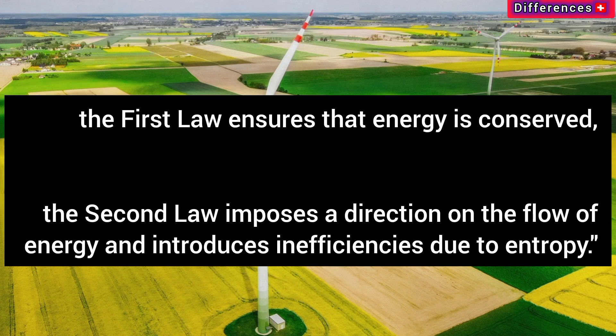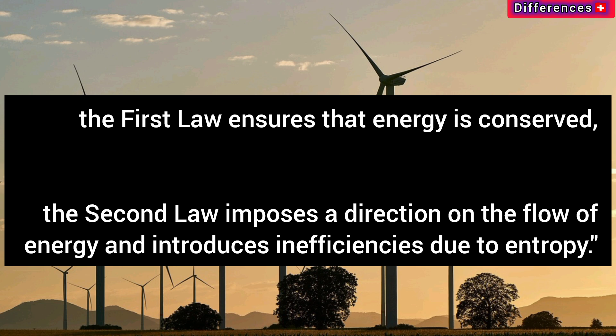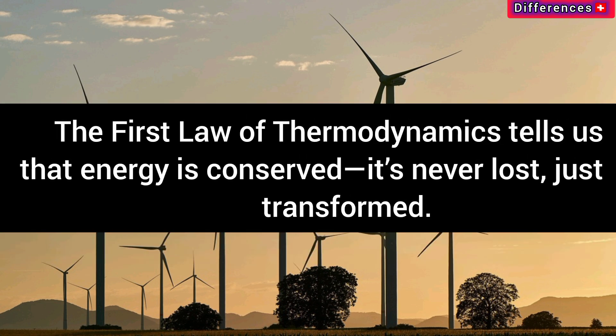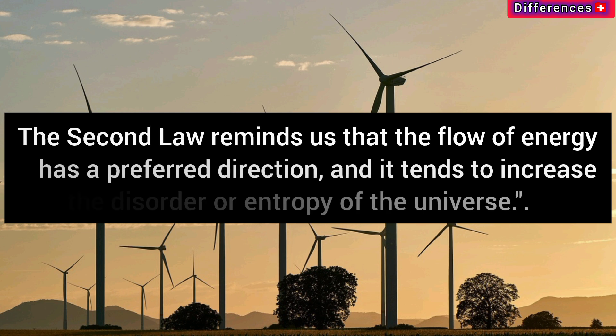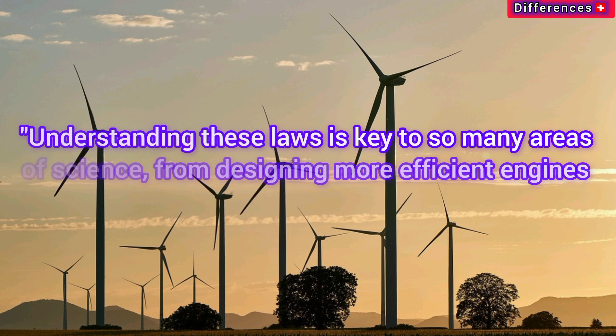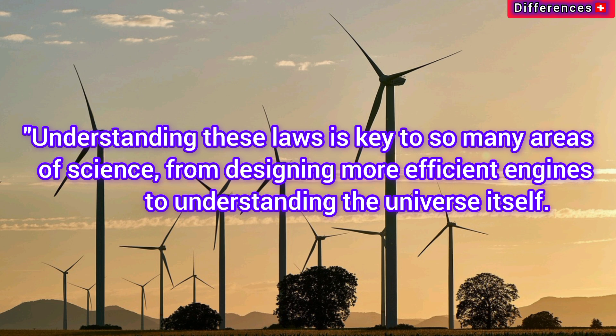So while the first law ensures that energy is conserved, the second law imposes a direction on the flow of energy and introduces inefficiencies due to entropy. To sum it up: the first law tells us energy is conserved — never lost, just transformed. The second law reminds us that the flow of energy has a preferred direction and tends to increase the disorder, or entropy, of the universe.